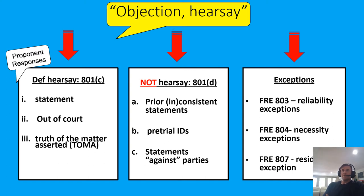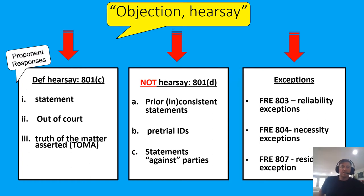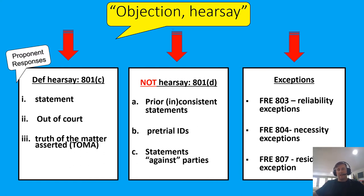The first response can always be: you say that, I say you don't have it. You say you have the one, two, three foundational requirements — I say you don't. Maybe it's not a statement, maybe it's not out of court, or most popularly, maybe it's not offered for the truth of the matter asserted. You make an argument that the definition is not met — the opponent does not have their foundational requirements and can't meet the elements under 801c. So the court should overrule the objection and allow in the evidence. That's the first pathway.